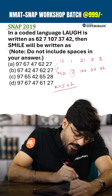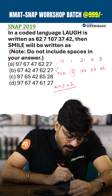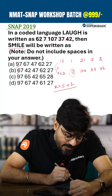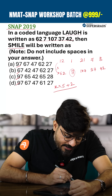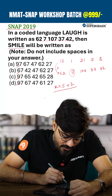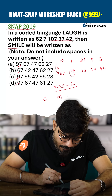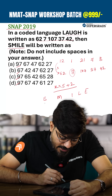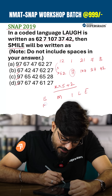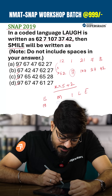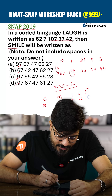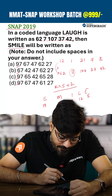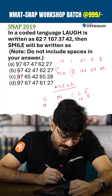Now, what they're asking is: what is the code for 'smile'? Let's look at the options — everything involves 97 and 67. S stands for 19, M stands for 13, I stands for 9, L stands for 12, and E stands for 5.